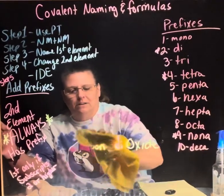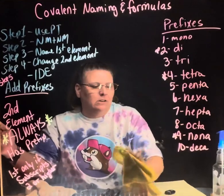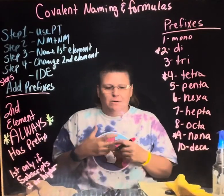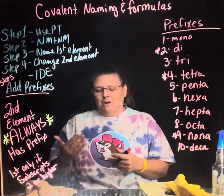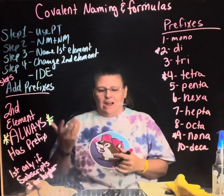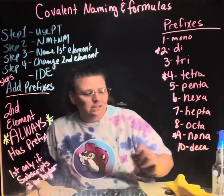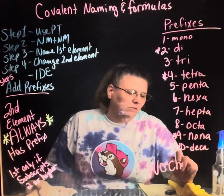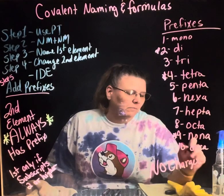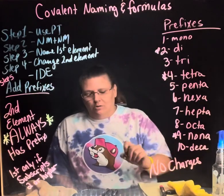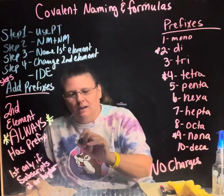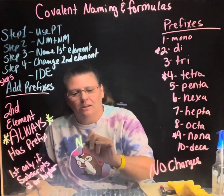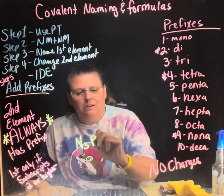Do not get this confused with ionic bonds. Ionic bonds have charges because you have a metal plus a non-metal — cations plus anions. Covalent compounds have no charges.